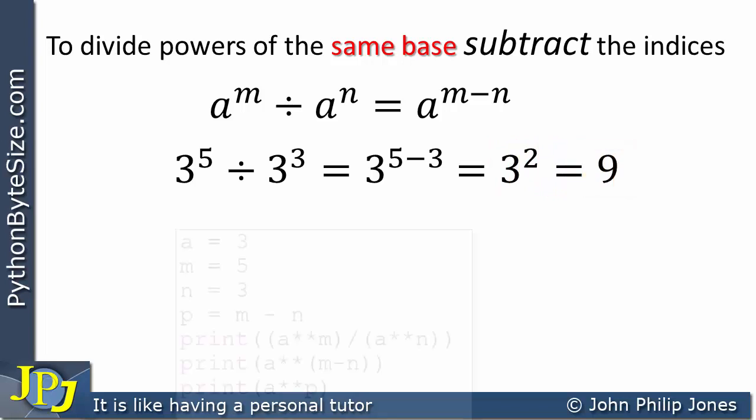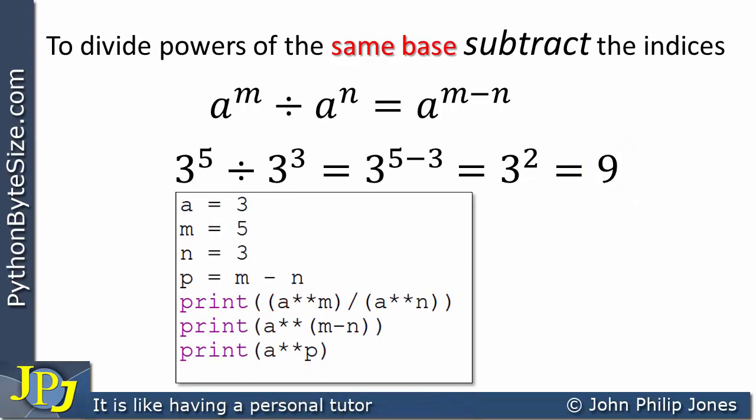The following Python program will confirm what we've just considered. Here you can see I've assigned variables values. You can see that I'm assigning a the value of 3, because that's the base of the numbers I'm dealing with here. M is assigned 5, because this is in the position of the M. And here, N is assigned 3, because this is in the position of the N. And on this line, I'm subtracting from the M, N, and that reflects this subtraction that takes place here.